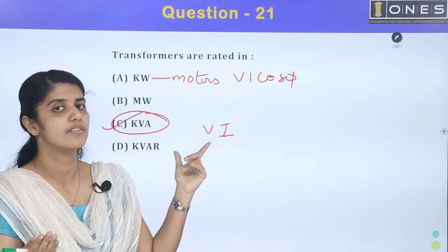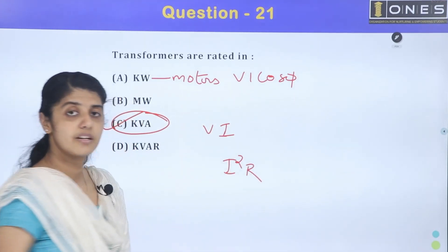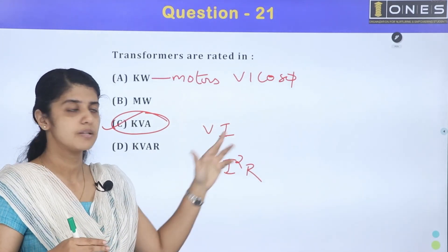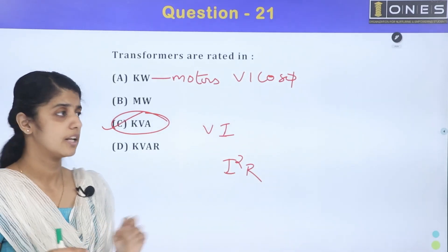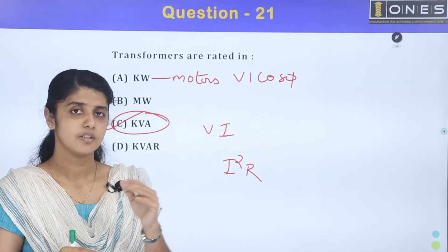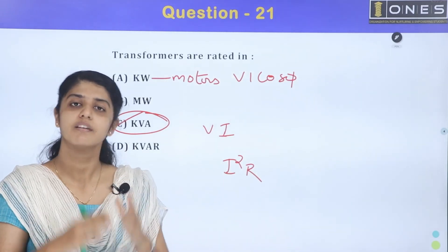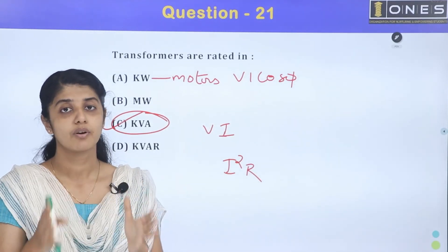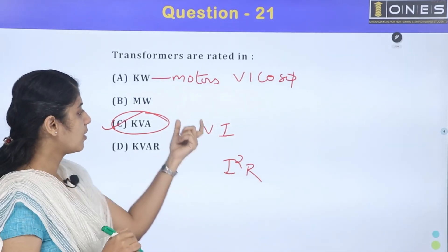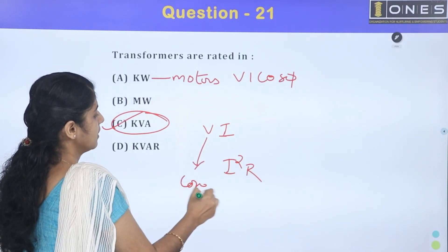What is the current? The copper loss comes from I²R. The current by the core — if you have complete flux, you have complete core. When we apply a supply voltage, complete rated voltage gives rated flux or rated copper loss. Full load copper loss and core loss — the core loss depends on the voltage.